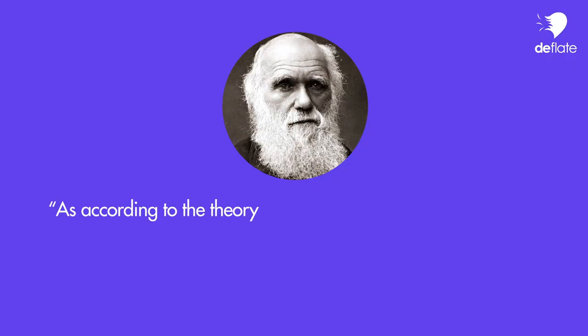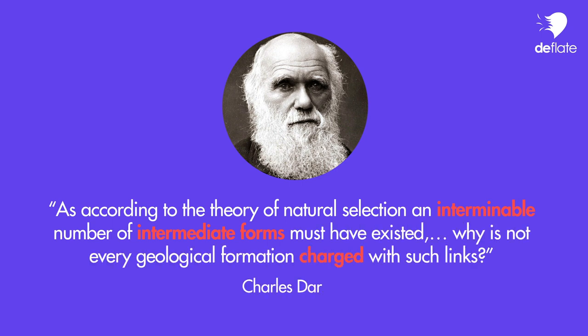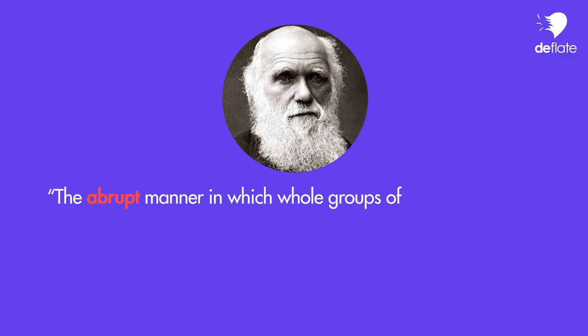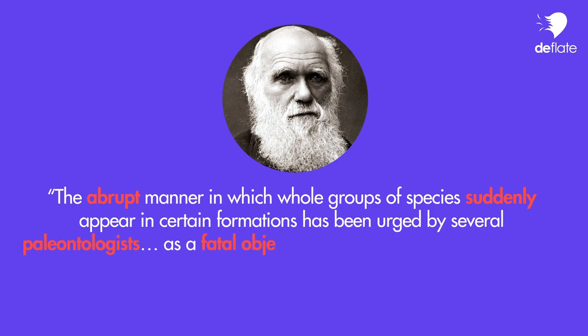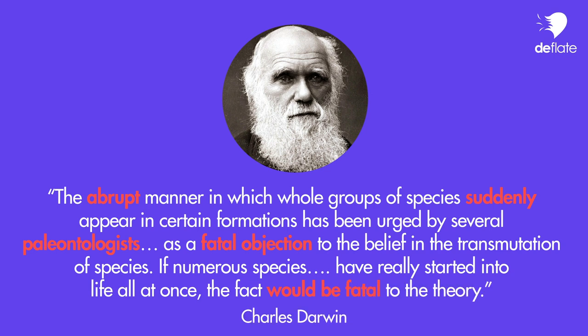Darwin himself was painstakingly aware of that and he expressed his discomfort repeatedly in his book. For example: "As according to the theory of natural selection, an interminable number of intermediate forms must have existed — why is not every geological formation charged with such links?" And: "The abrupt manner in which whole groups of species suddenly appear in certain formations has been urged by several paleontologists as a fatal objection to the belief in the transmutation of species. If numerous species have really started into life all at once, the fact would be fatal to the theory."